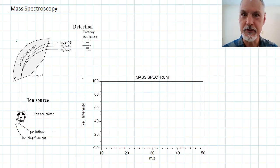This is the first in our three programs that take a look at spectroscopy techniques. And the first one we'll look at is mass spectroscopy, then infrared, and finally, magnetic nuclear resonance.